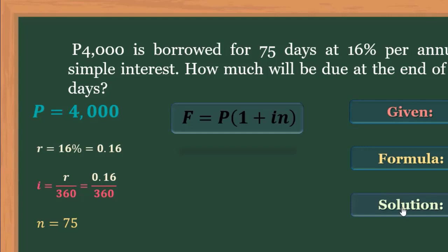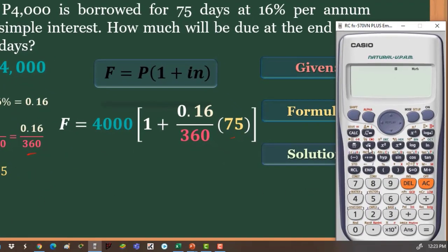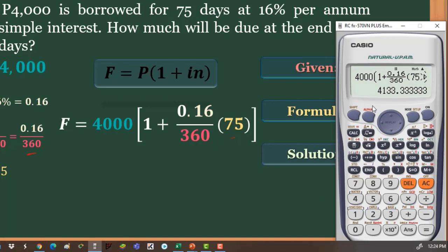For the solution, we simply substitute values into our formula. We have the principal, which is equivalent to 4,000, then 1 plus i, which is equivalent to 0.16 over 360, and the number of interest periods is equivalent to 75. By solving this using your calculator, we have 4,000 multiplied by 1 plus 0.16 over 360, then multiplied by 75, and we get 4,133.